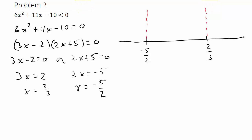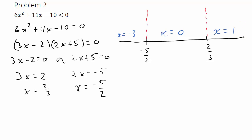We need to choose a number from each region. Negative 5/2 is negative 2.5, so we choose x equals negative 3 for the leftmost region. We choose x equals 0 for the middle region, and x equals 1 for the rightmost region. We'll plug each into the factored form since that's the easiest.